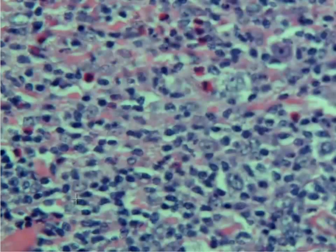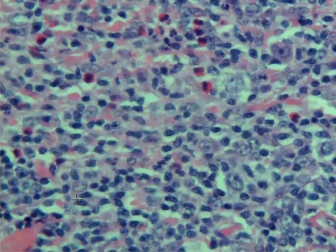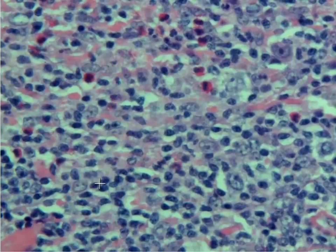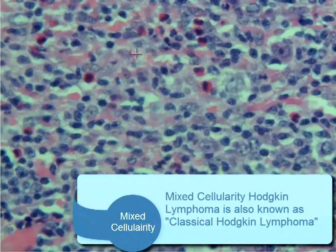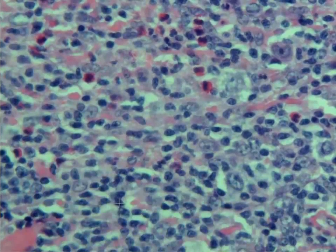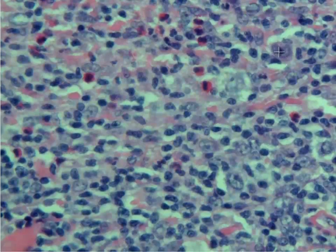If we go down to higher power and take a look at these cells, we'll try to find some Reed-Sternberg cells. This is an example of the classical type — the mixed cellularity Hodgkin lymphoma. You'll notice that we have several eosinophils — those bright pink cells — lots of lymphocytes, which are the little blue cells, and then occasional large cells with big prominent nucleoli. That's a Reed-Sternberg cell.